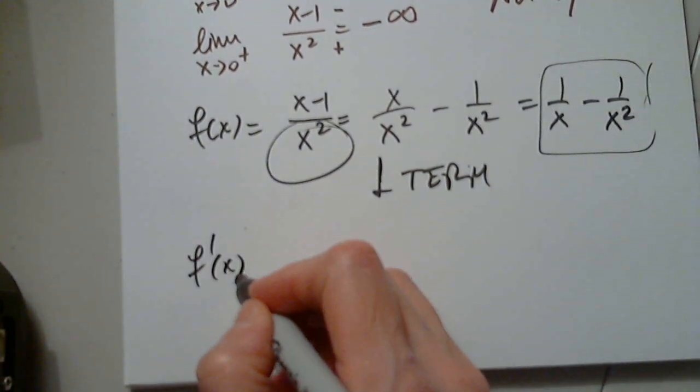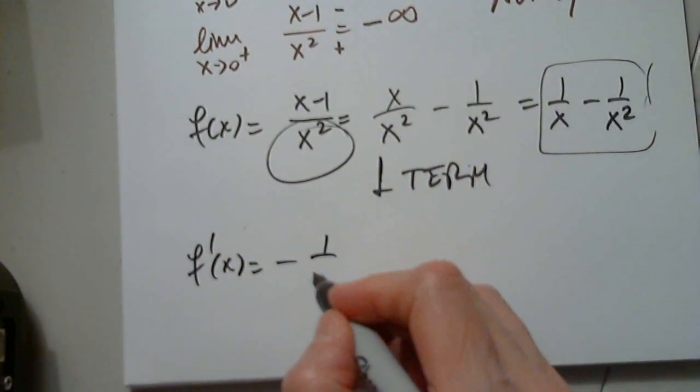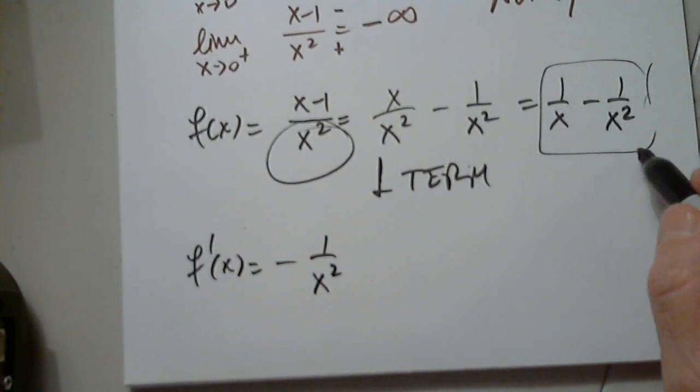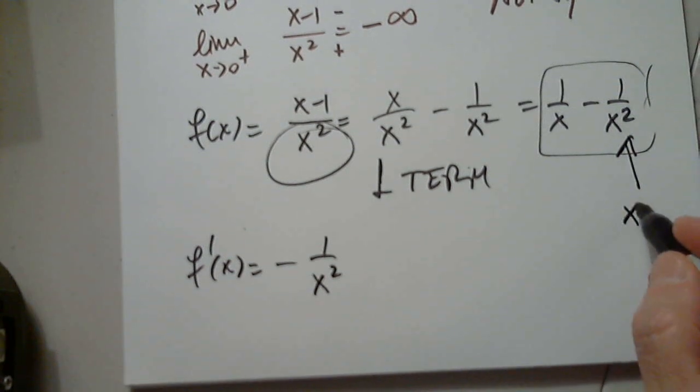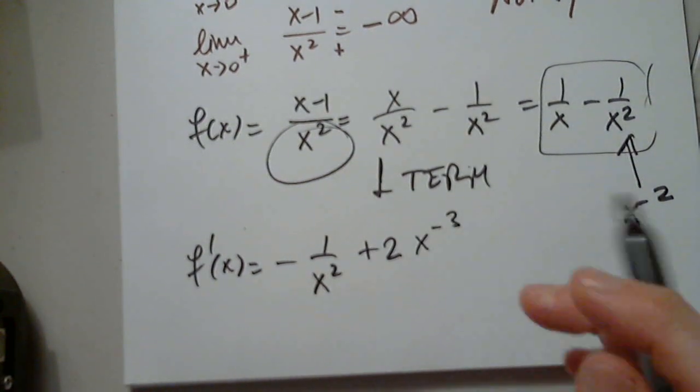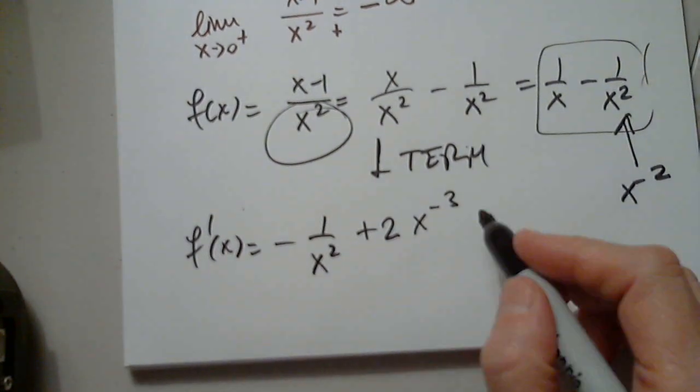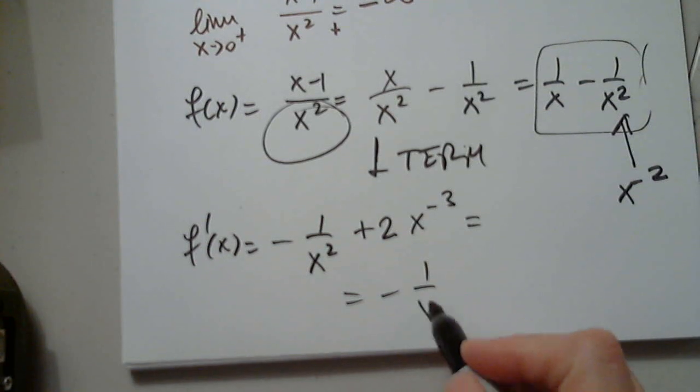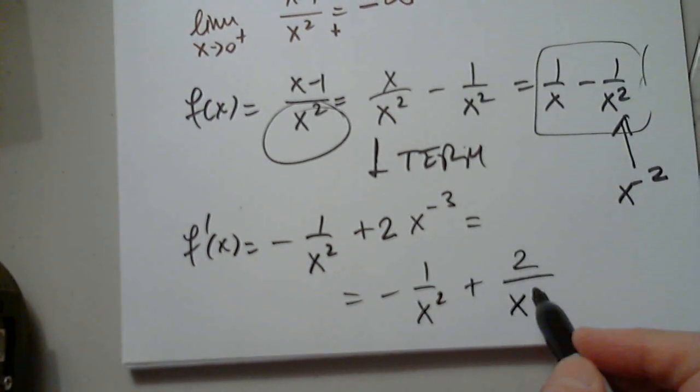So f prime of x, when I differentiate this I get negative 1 over x squared. Yeah, for this one I have to write x to negative 2. So I have positive 2 x to negative 3.